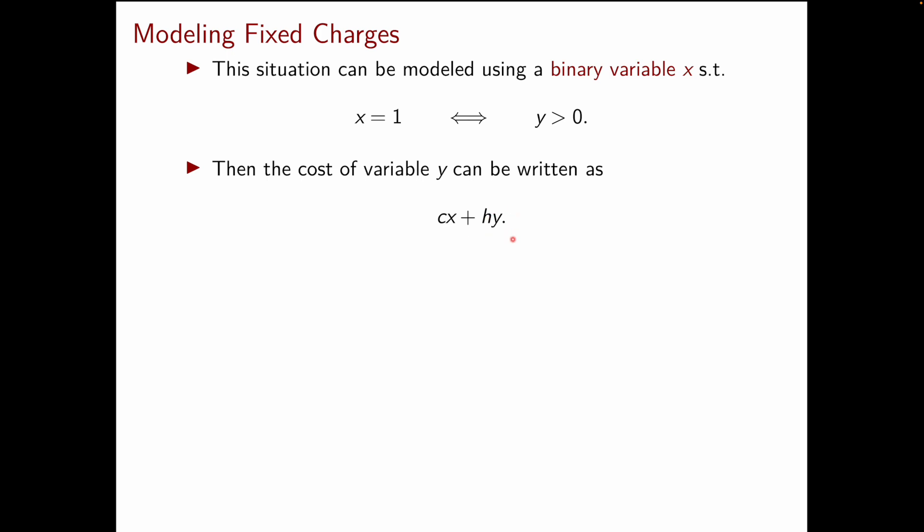On the other hand if y is positive then from the if and only if we have x equal to one and so the total production cost will be c plus hy as expected.